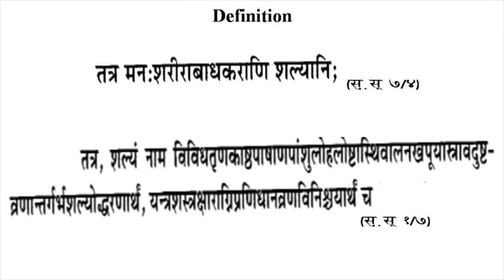In UG curriculum it comes in 4th year B.A.M.S. Shalyatantra. There are two words in Shalyatantra: first is Shalya and another is Tantra. The simple meaning of Shalya is a foreign body or a substance which produces pain in a patient's body. According to Maharshi Sushruta, the definition of Shalya is 'Tatmanar-shareer-badha-karani-shalyani' — a substance which produces pain in the patient's body as well as in the mind. The science which deals with this type of substance is Shalyatantra.